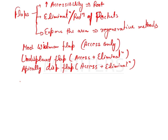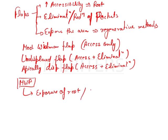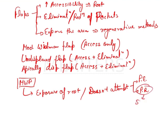The modified Widman flap is generally intended for exposure of the root, so you can remove debris, plaque, and calculus that are not easily cleanable — getting direct access helps clean the roots properly. It does not attempt reduction of pocket depth. Although some reduction can be achieved due to shrinkage, that is not the intention of the modified Widman flap.